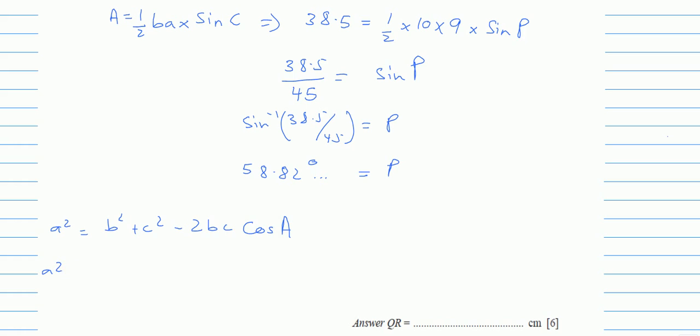So a squared is what I am looking for. The b squared was, let me say it was 10. I can make it 9, it doesn't matter. Minus 2 times 9 times 10 times cos A. A I already found which is still in my calculator which is 58.82.